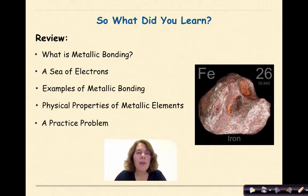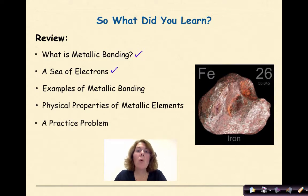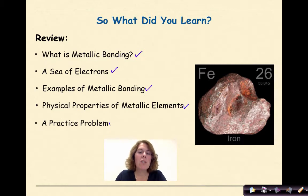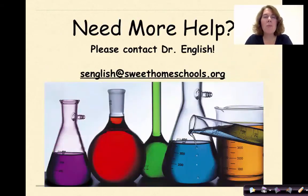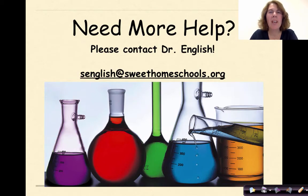So what did you learn? We talked about what is metallic bonding. We referenced the term a sea of electrons. We looked at some examples of metallic bonding. We talked about the physical properties of metallic elements. And finally, we did some practice problems at the end. Need more help? Feel free to contact me. Have a great day.